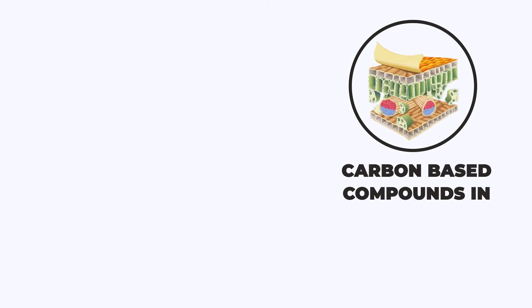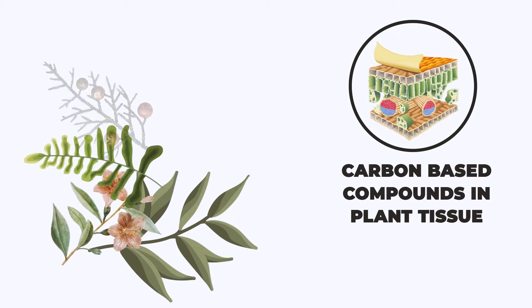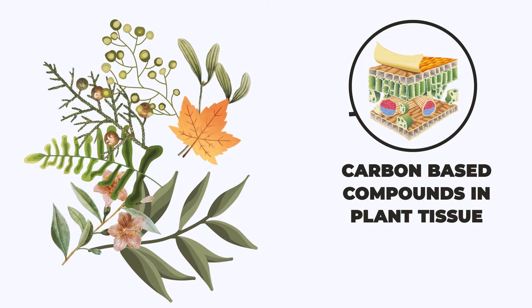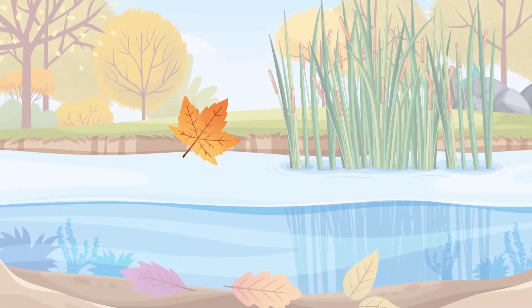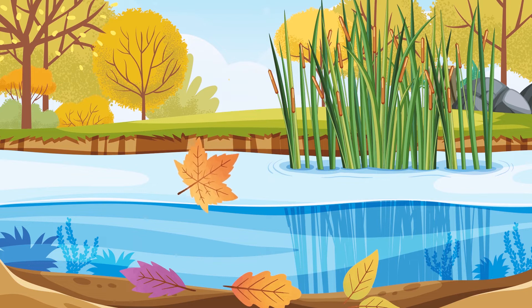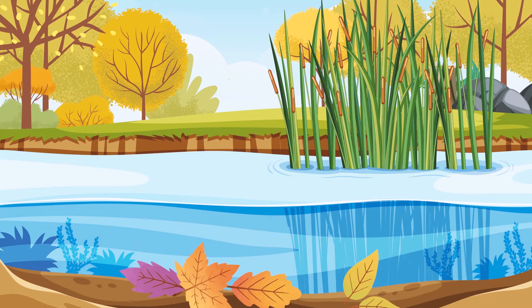Our natural environment contains carbon-based compounds from plant and animal matter that is recycled by decomposition. Trees, broken limbs, shrubs, and leaves fall to the forest floor, or they are swept into wetlands, bogs, streams, and lakes.